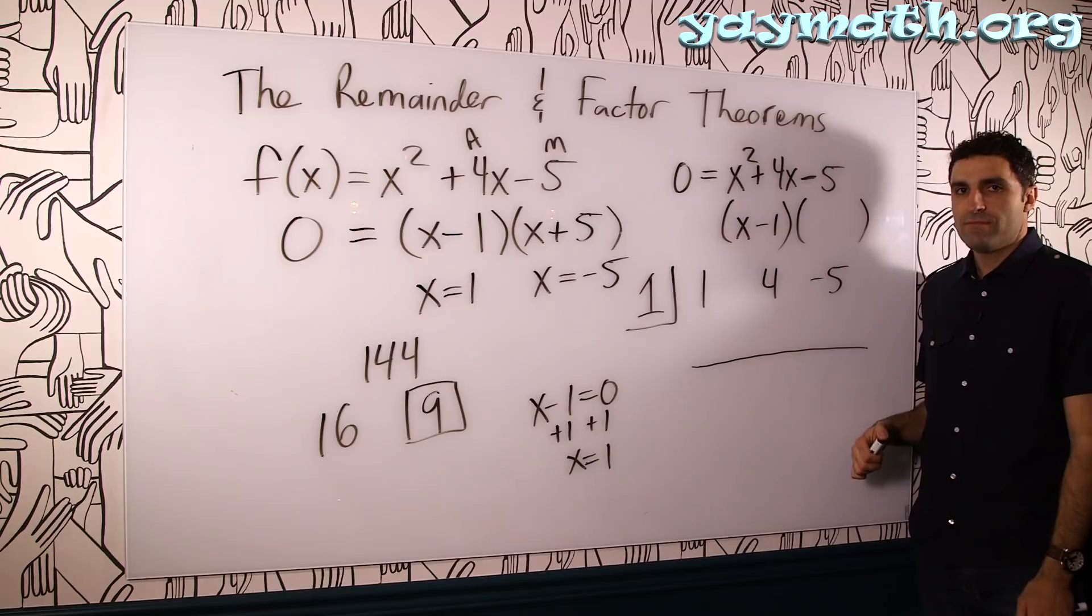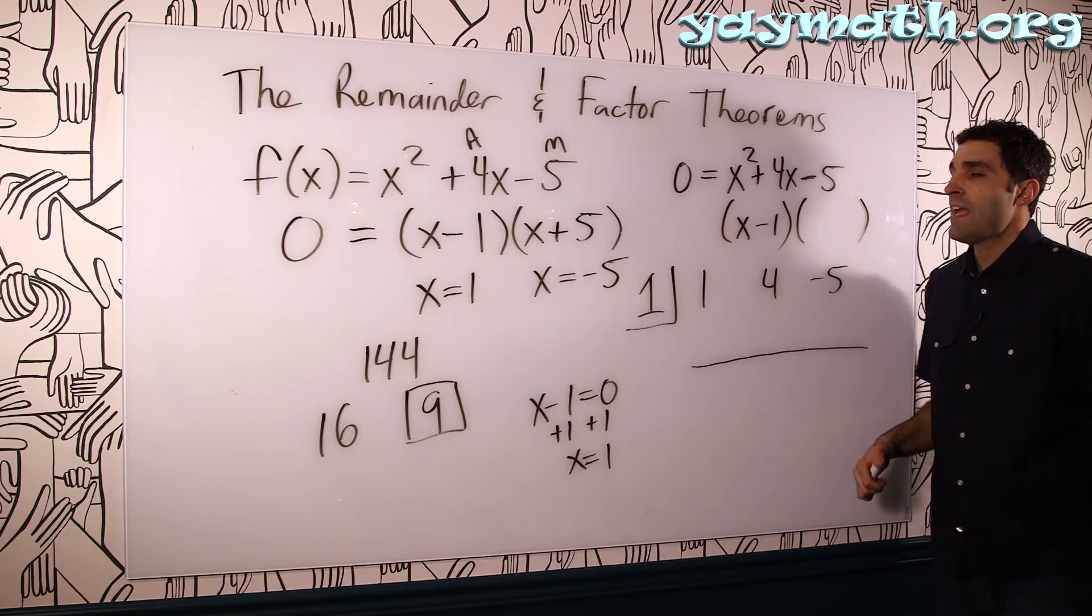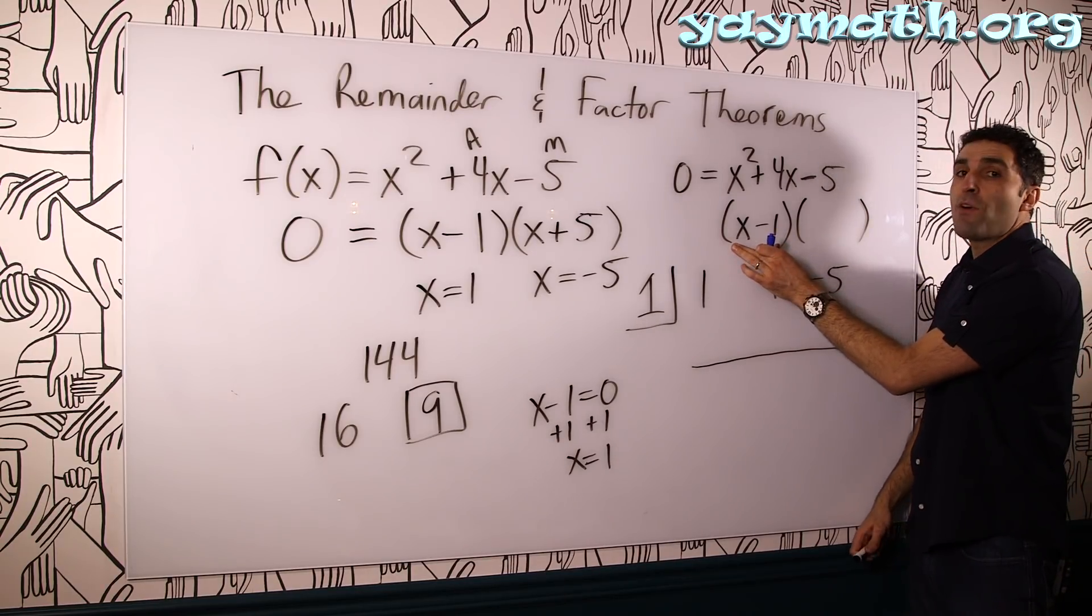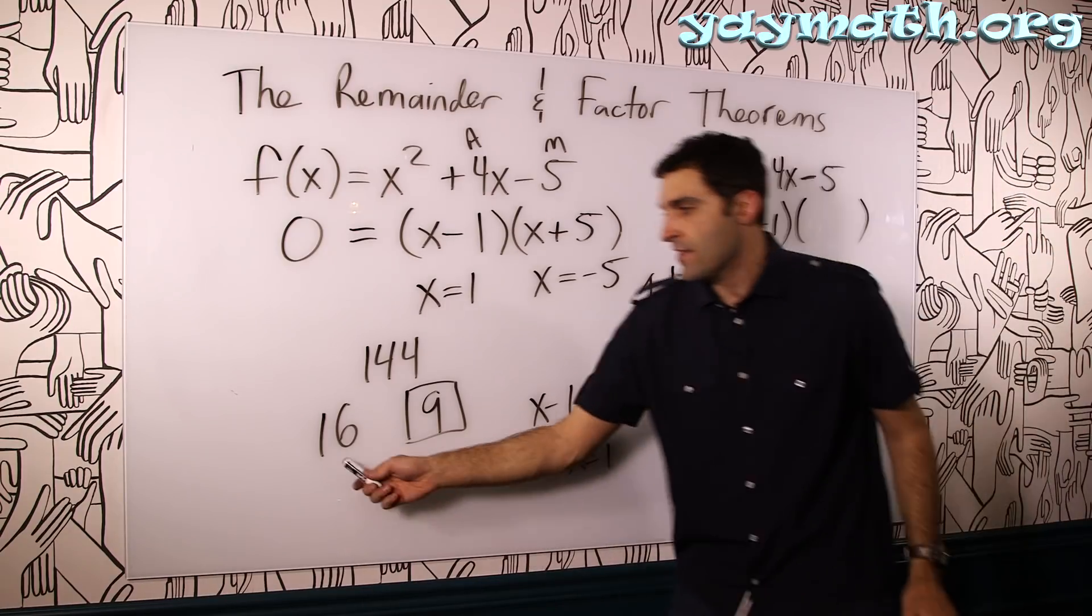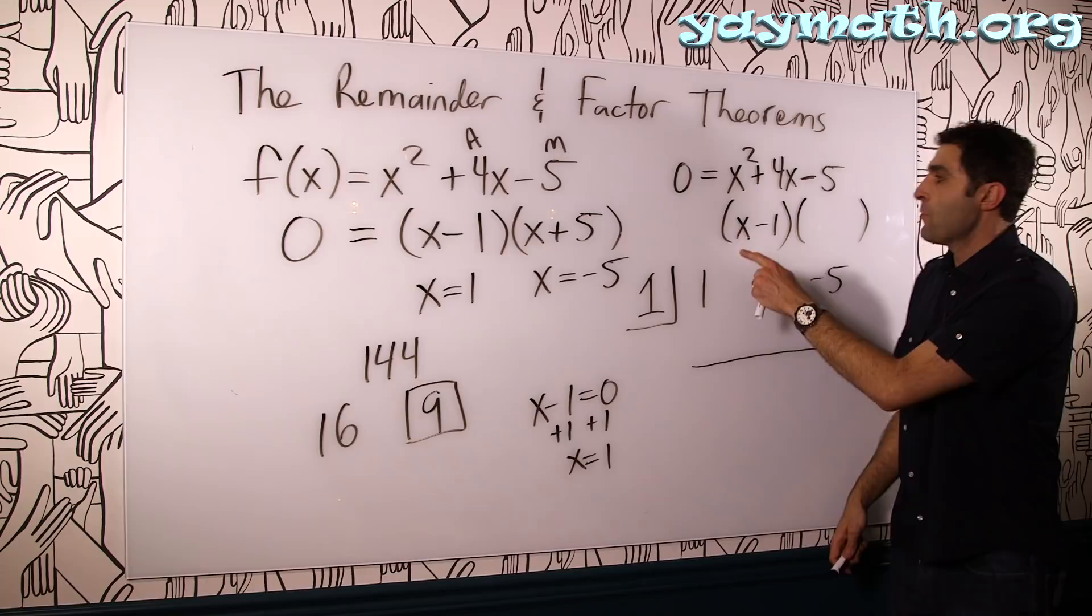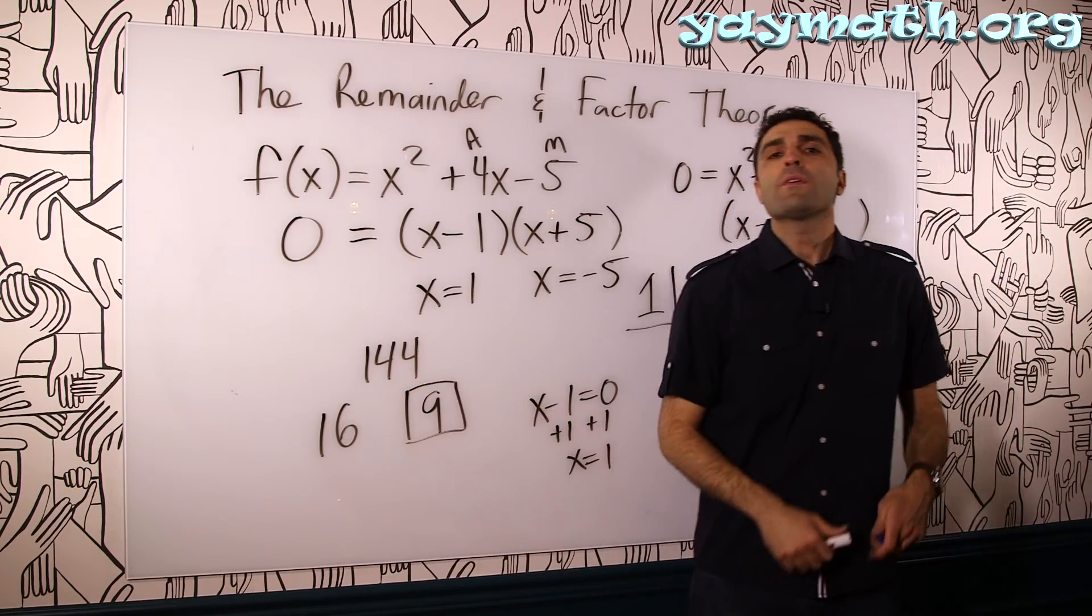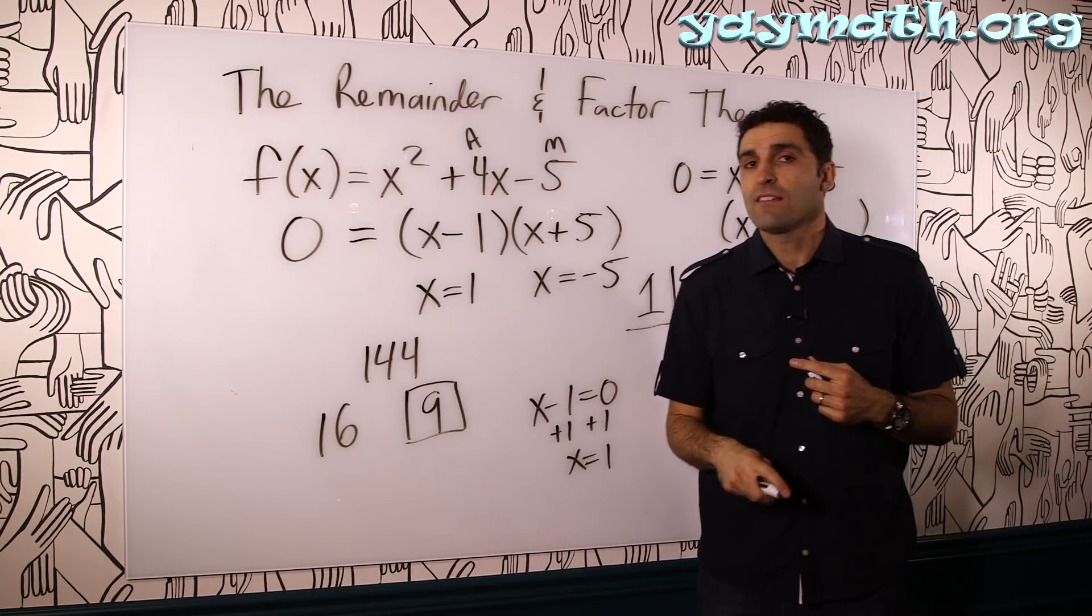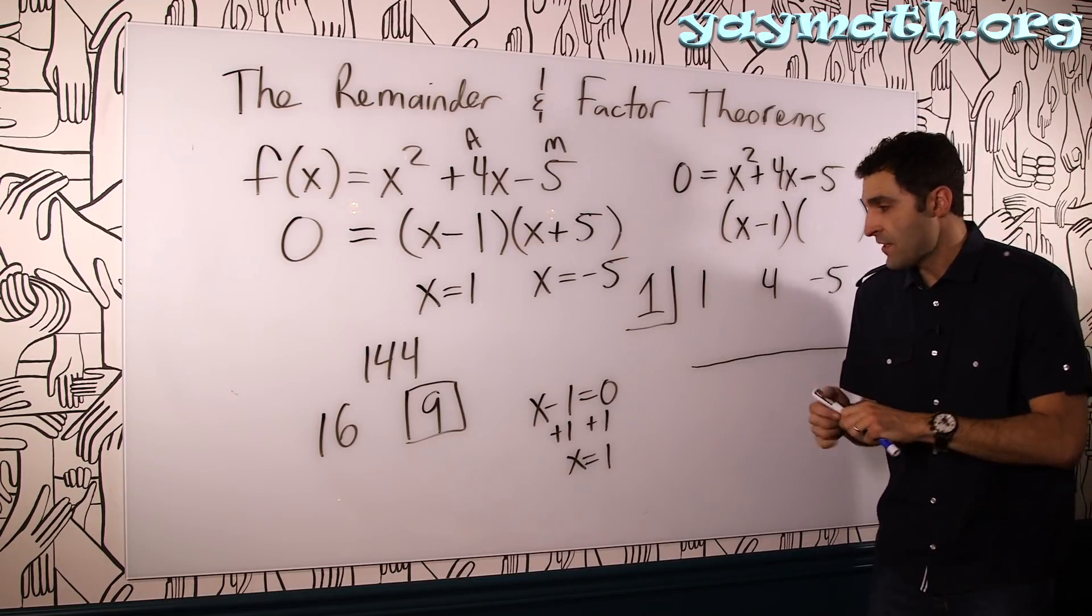Will this divide evenly? Is the question. Will x minus 1 divide evenly? And hopefully you believe that the answer is yes. Because I offered that x minus 1 is a factor. So if x minus 1 is a factor, just as 16 is a factor of 144, it would have to divide evenly. So we're going to divide this into there. If something divides evenly into a term, what would the remainder be when you know something divides evenly? Hopefully you know that the remainder would have to be 0. Here it comes.